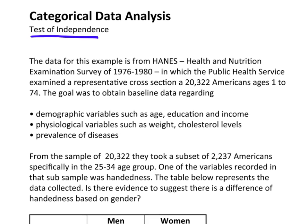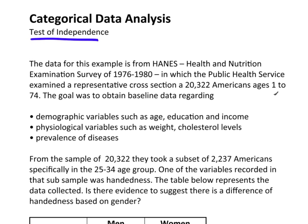Let's jump into the example. The data for this example is from the Haines Health and Nutrition Examination Survey, 1976–1980, in which the Public Health Service examined a representative cross-section of 20,322 Americans ages 1 to 74. The goal was to obtain baseline data regarding demographic variables such as age, education, and income, as well as physiology variables such as weight, cholesterol levels, and the prevalence of diseases.